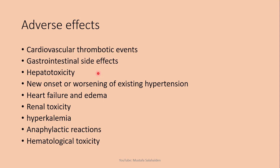For hepatotoxicity: Celecoxib causes hepatotoxicity in 1% of patients because it is metabolized by the liver, leading to mild hepatic injury identified by ALT and AST levels three times the upper normal value. Severe hepatic injury occurs in rare occasions, and when it happens the drug should be stopped.